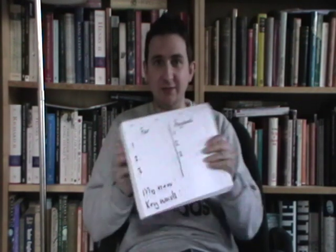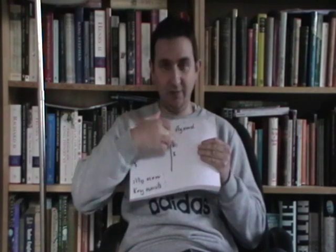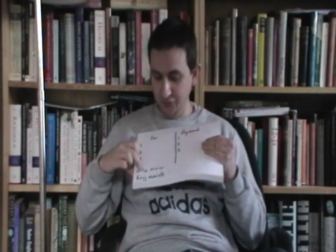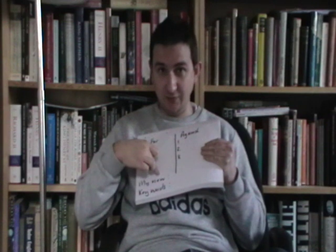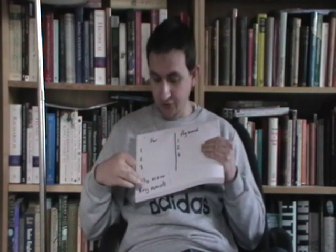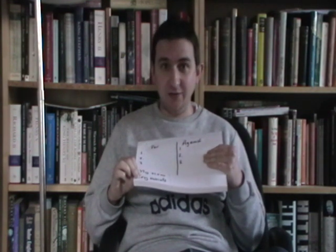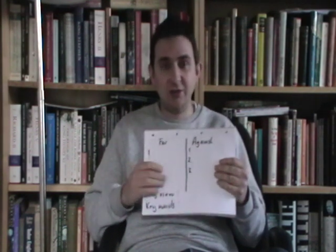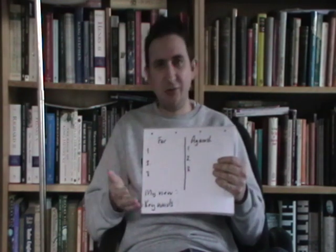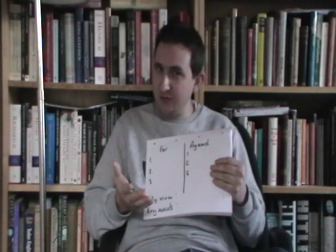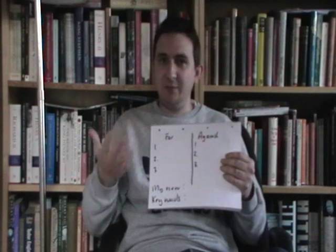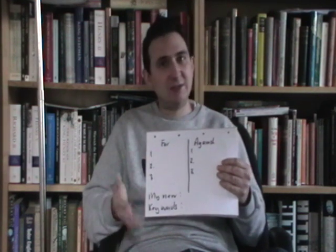I think in the exam it's always worth doing a little plan, spending two or three minutes, like this: the points for, the points against, and also what your view is — what is your argument going to be. I would also note down key words, because AO3 requires key words. So if it's a constitution question, you probably want to get 'codified' and 'uncodified' in there, 'asymmetrical devolution.' If it's a parliament question, words like 'legitimacy' and 'mandate,' those sorts of points.